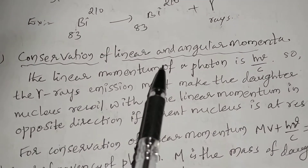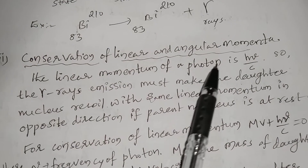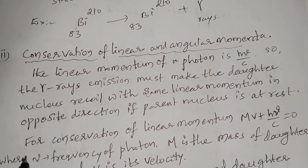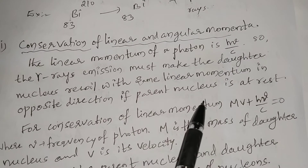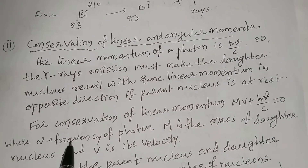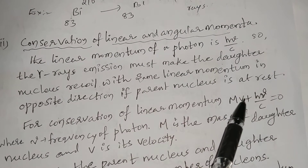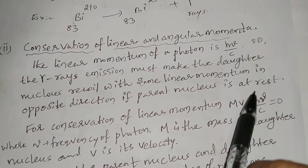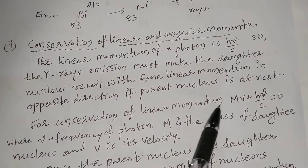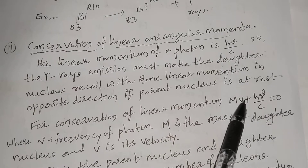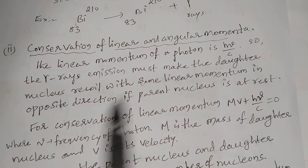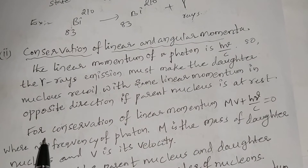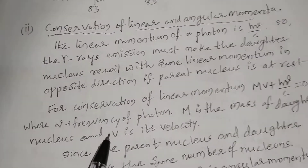For conservation of linear momentum, the linear momentum of a photon is h-nu over c. The gamma ray emission must make the daughter nucleus recoil with the same linear momentum in the opposite direction if the parent nucleus is at rest. So m·v plus h·nu over c equals zero, where m is the mass and v is the velocity of the daughter nucleus, nu is the frequency of the photon, and c is the velocity of the photon. Therefore, the momentum of the daughter nucleus equals the momentum of the photon, in opposite directions, so momentum is conserved.